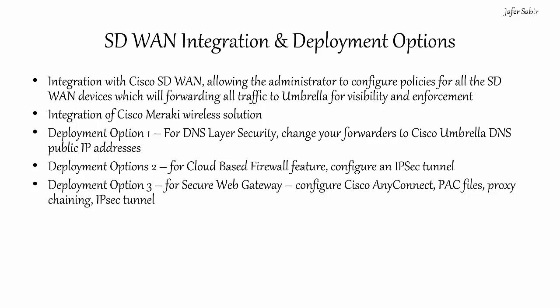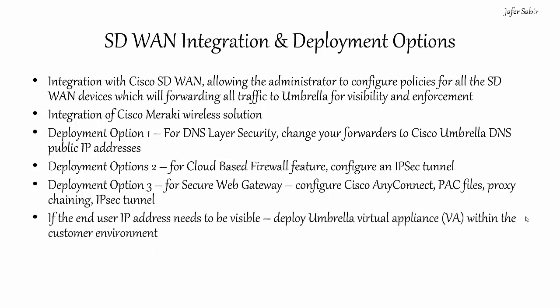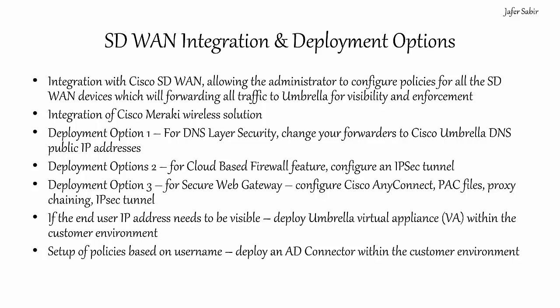AnyConnect or PAC files are the simplest and quickest methods. If you want Umbrella to see the end user's device IP address, you would use an Umbrella VA — the Umbrella Virtual Appliance — within the environment, which encrypts the connection so Umbrella can see which device is making which DNS requests for more granular control and visibility. You can also set policies based on usernames and user groups by installing an AD connector — an Active Directory connector — which feeds user information to Umbrella. To see AD user info and IP mappings, you need both the AD connector and the Umbrella Virtual Appliance.